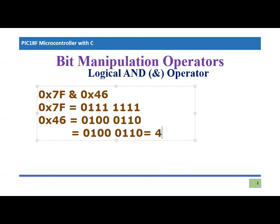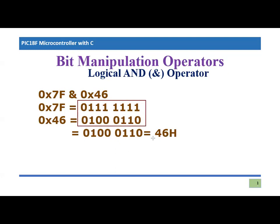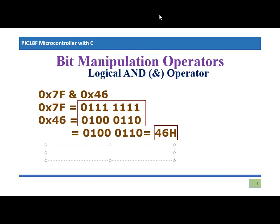The result in hexadecimal would be 0x46. So if we AND 0x7F and 0x46, the result is 0100 0110, which in hexadecimal is 0x46. Now if I want to write this in C, I simply write: 0x7F & 0x46; — the ampersand sign indicates a logical AND operation. This is the instruction used in C language to perform the AND operation between two 8-bit numbers.